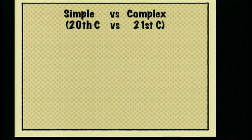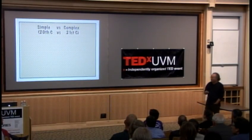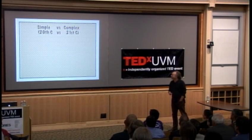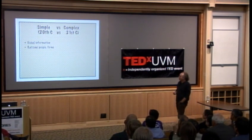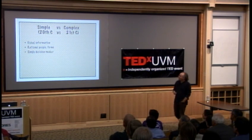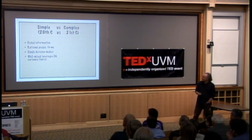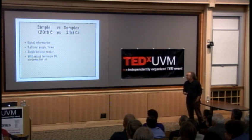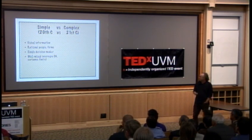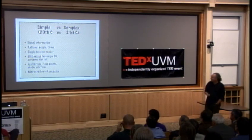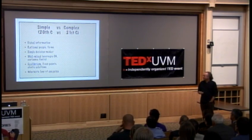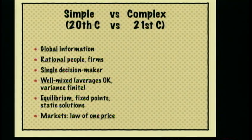I want to contrast, as a caricature, the simple social science that we grew up with — that many of us who went to graduate school in the last century learned — versus what we might call 21st century social science. In the old models, people were rational, global price vectors obtained, the head of the firm is a single decision maker maximizing profits. We have well-mixed averages, finite variances, and we solve for equilibrium — Nash equilibrium, Walrasian equilibrium. There's one price that obtains in the market.